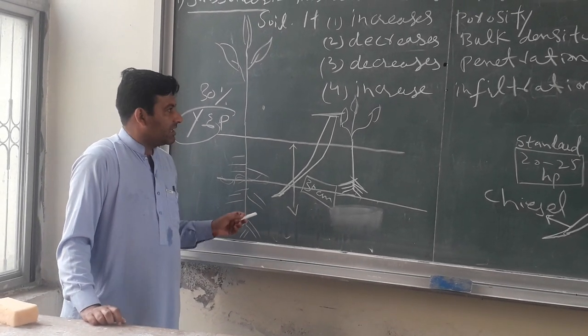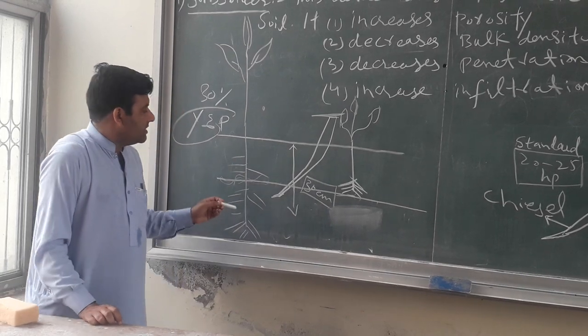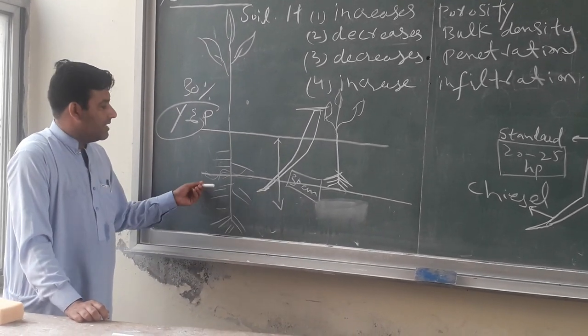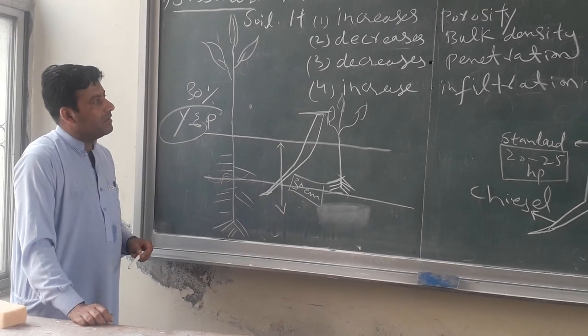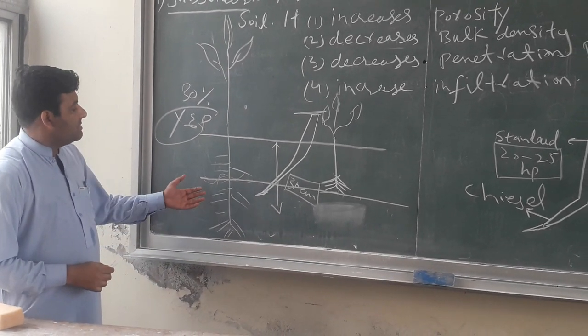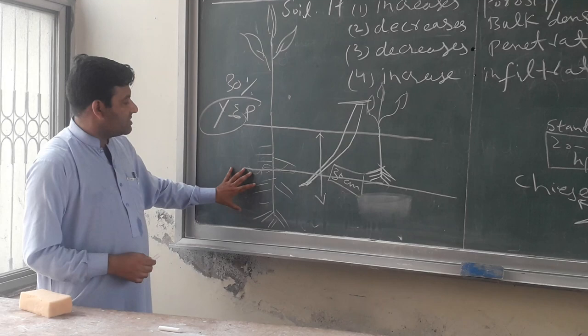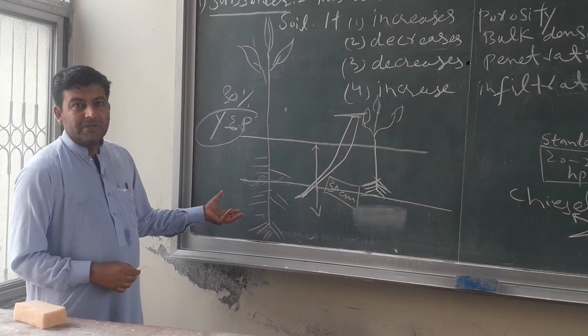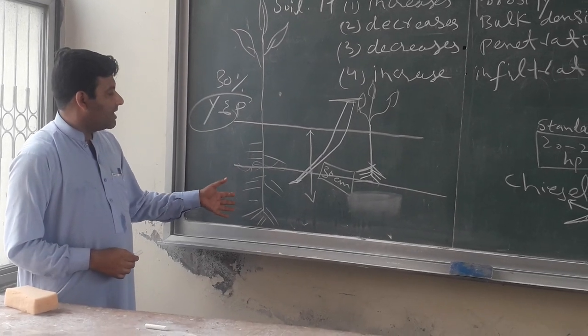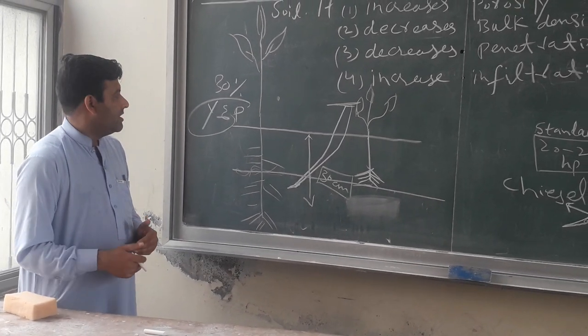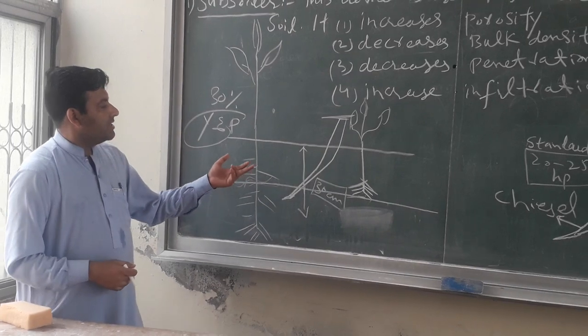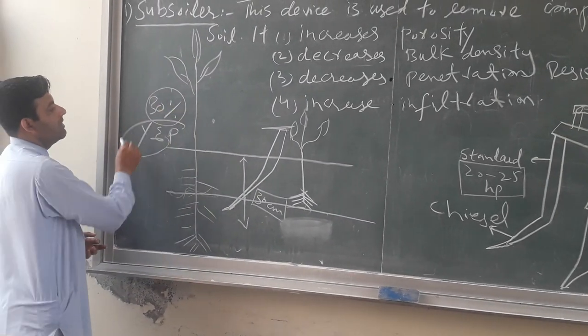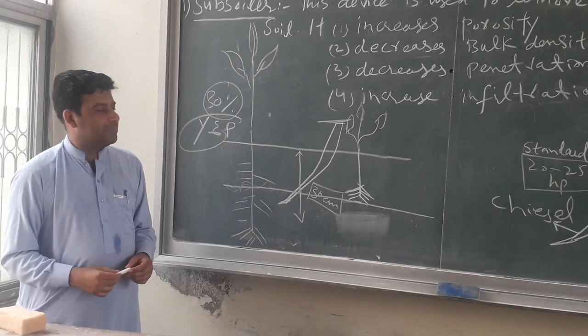Roots can travel very easily through the soil pores. By use of subsoiler, the farmer can increase yield and production up to 30%.